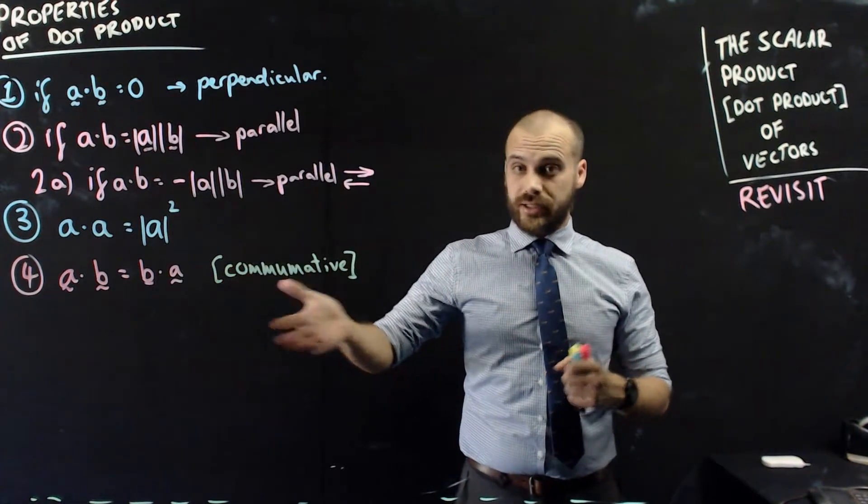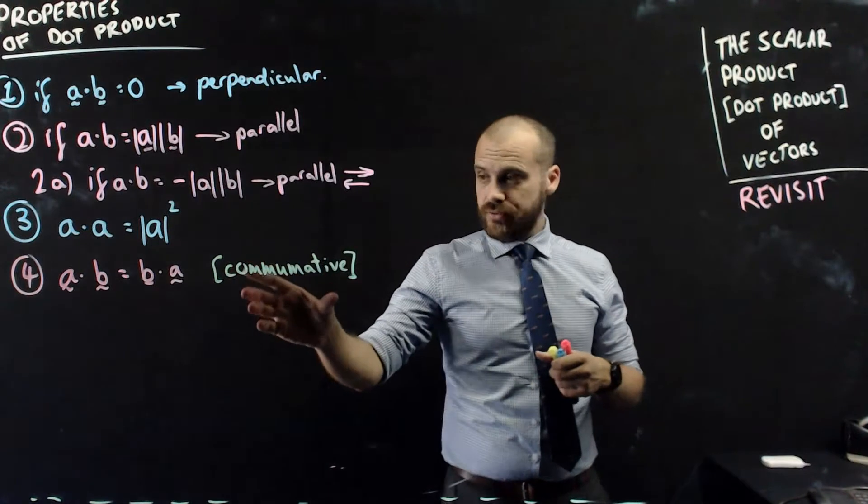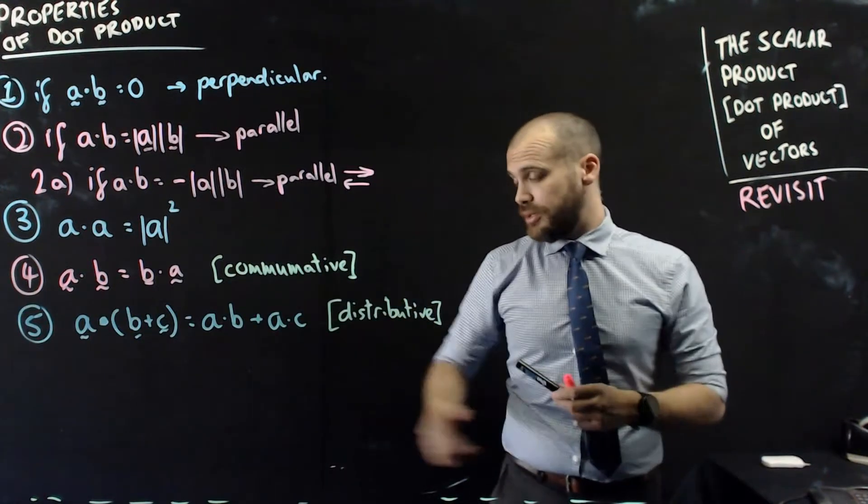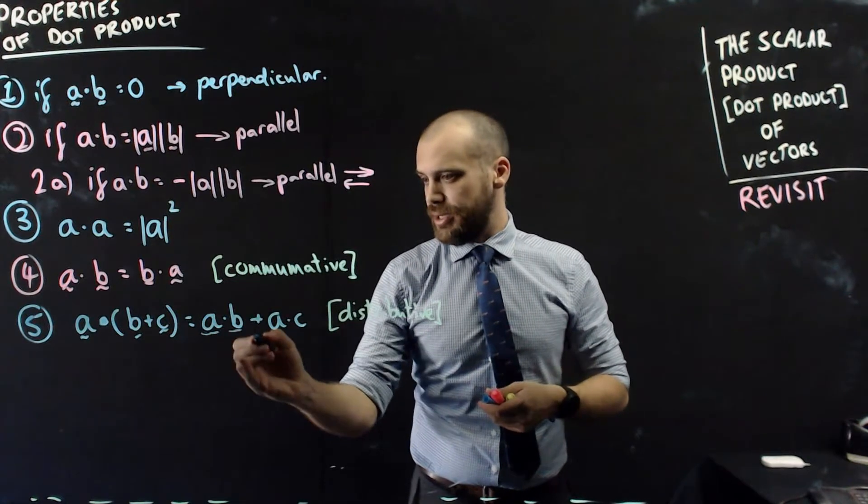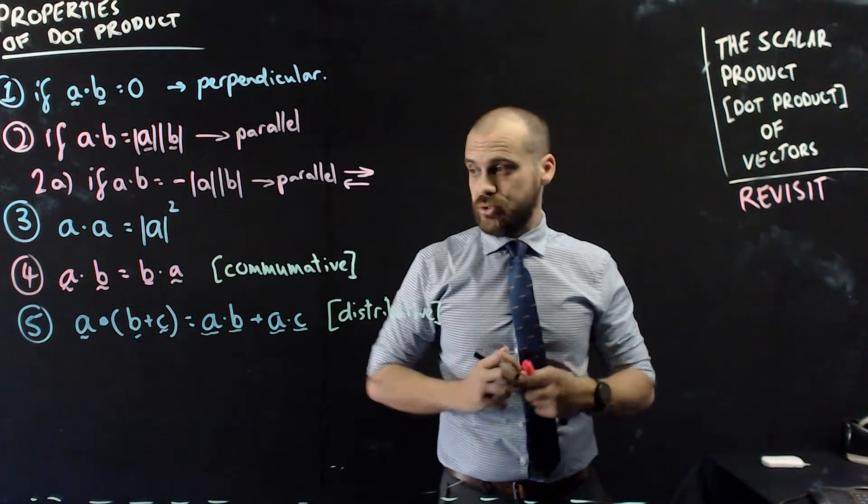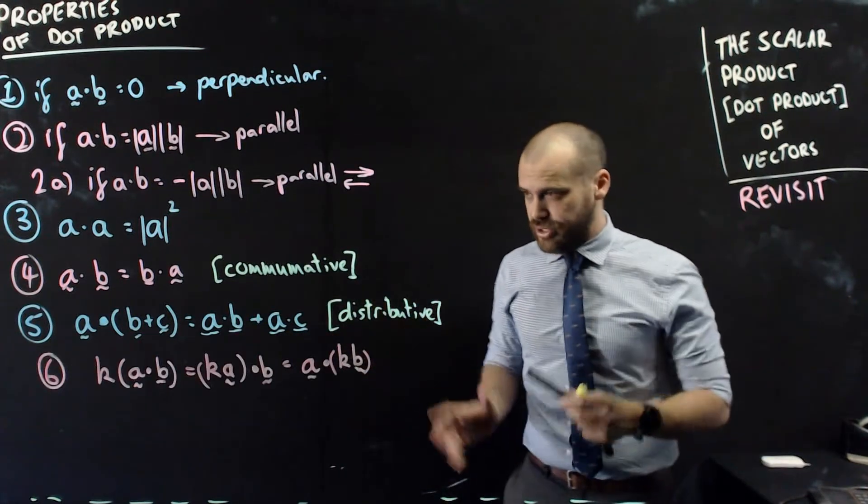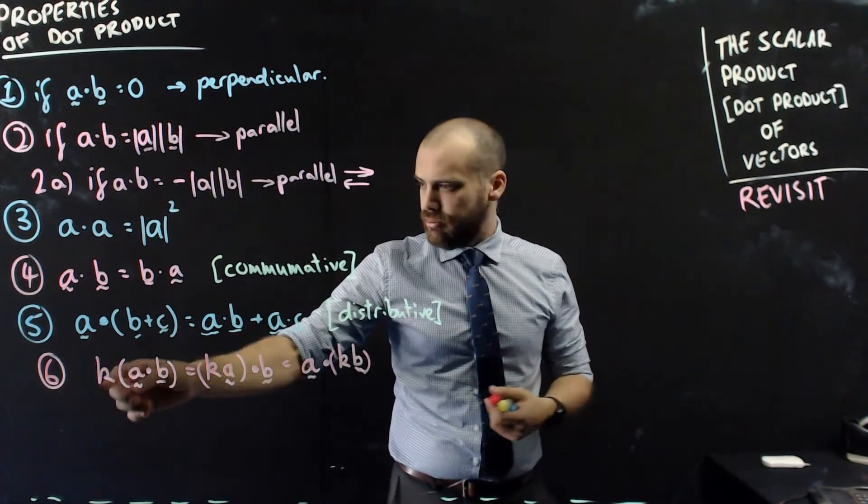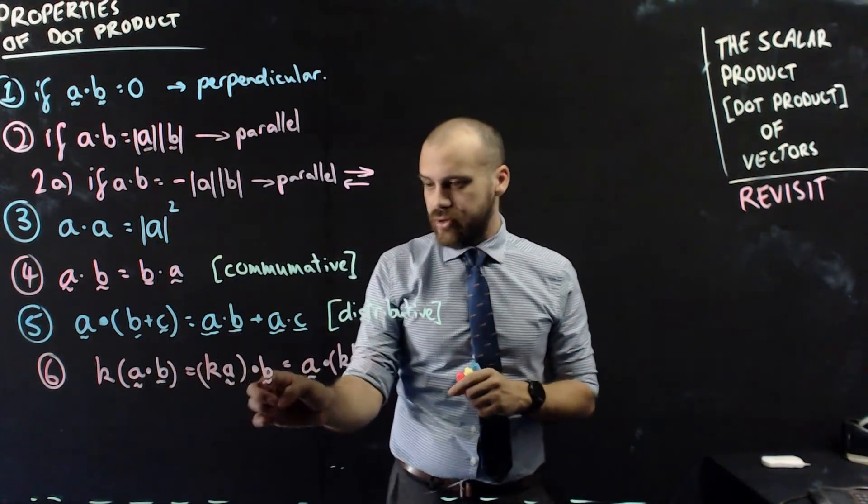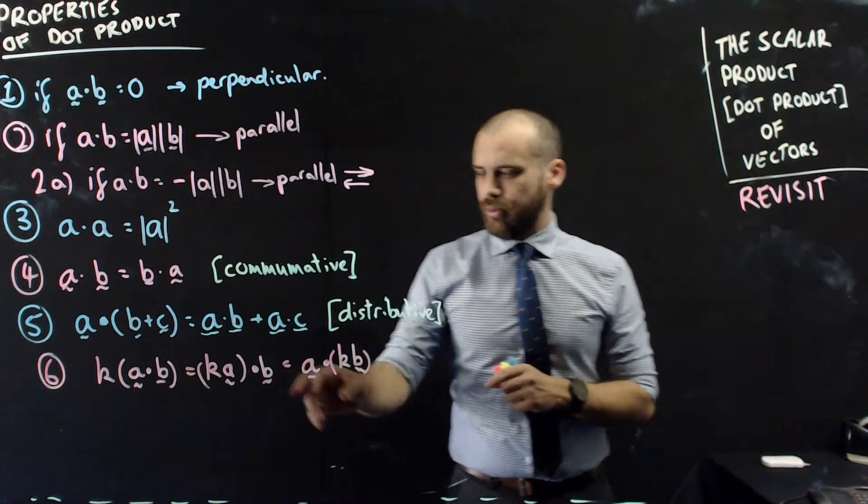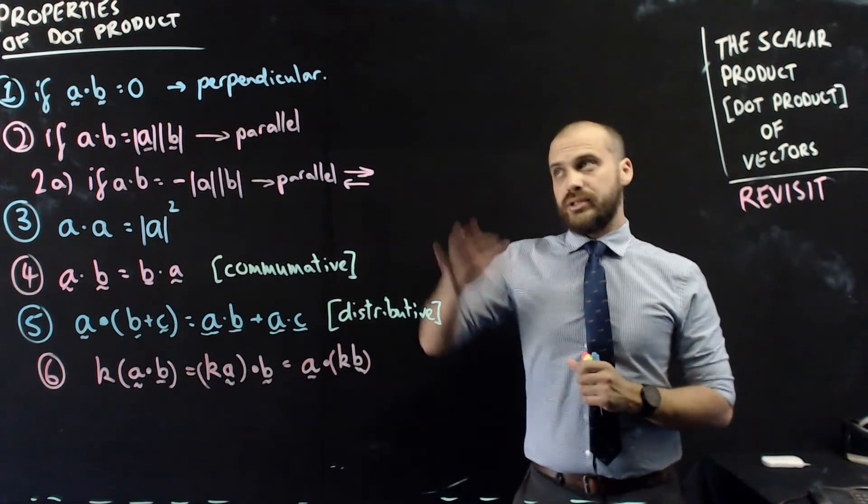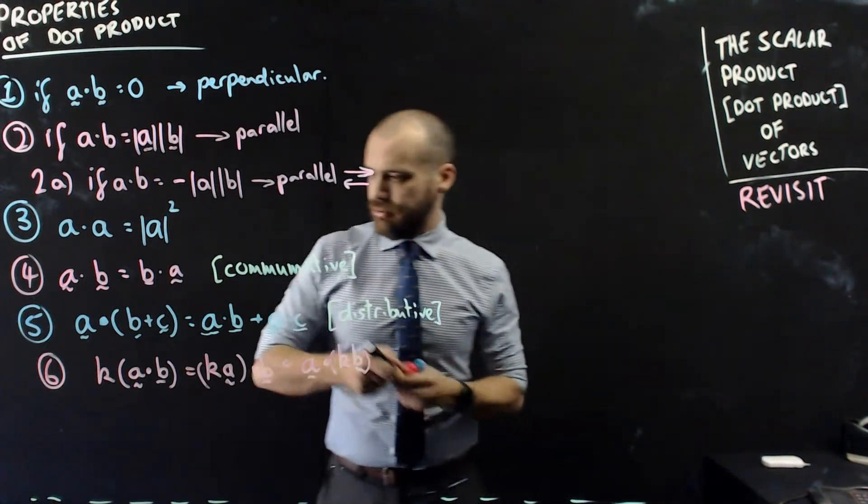a dot b equals b dot a, saying like 5 times 2 equals 2 times 5. We call that being commutative. We say the scalar product is commutative. We can also say that it's distributive. That means that a dot b plus c is equal to a dot b plus a dot c. You've used the distributive law before with normal multiplication and numbers. We can do it with vectors as well using the scalar product. A little bit more distributive action here. We have a number or a scalar multiplied by the dot product of a and b. We could instead multiply the scalar by a and then do the dot product of ka dot b. Or we could do a dot product k times b. It doesn't really matter how we break that up.